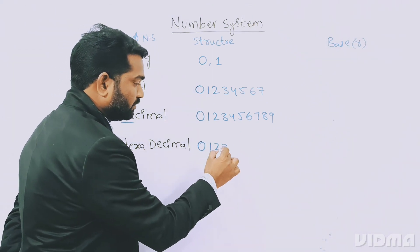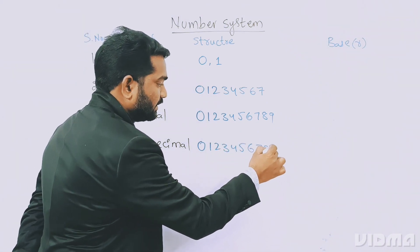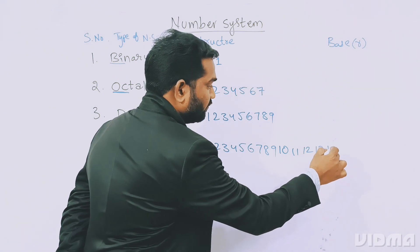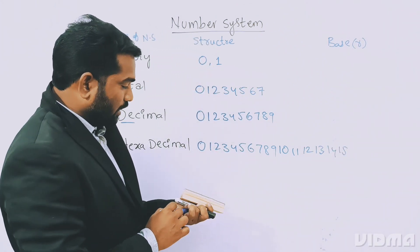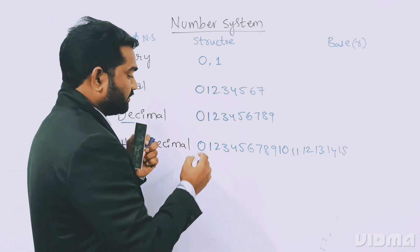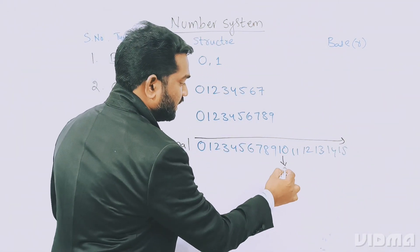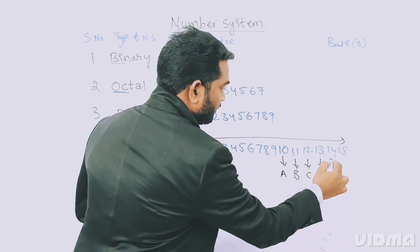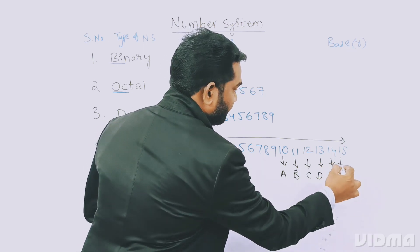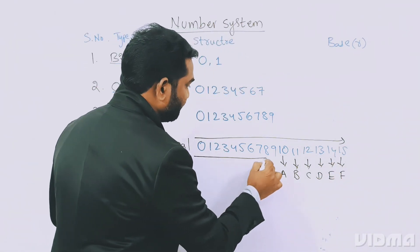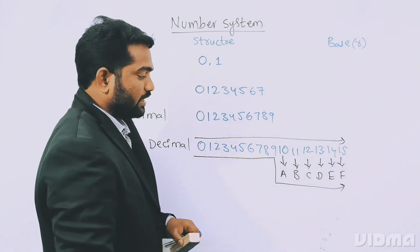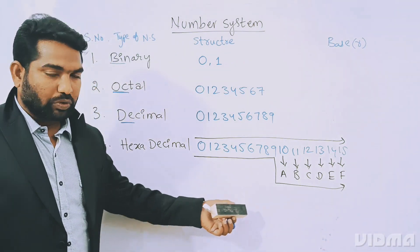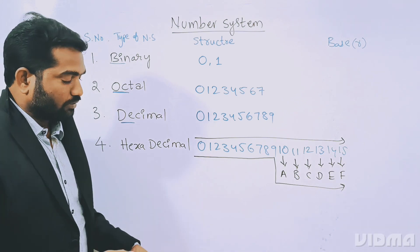Those sixteen values are 0 through 9, and after 9, we have 10, 11, 12, 13, 14, and 15. We can call 0 to 15 as they are, or alternatively, 10 is called A, 11 is B, 12 is C, 13 is D, 14 is E, and 15 is F. So we can represent hexadecimal as 0 to 9 and then A, B, C, D, E, F.